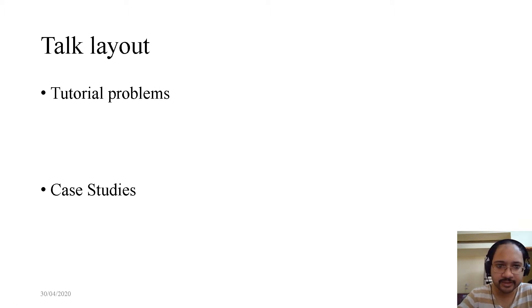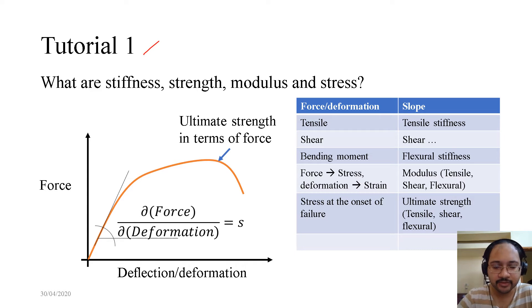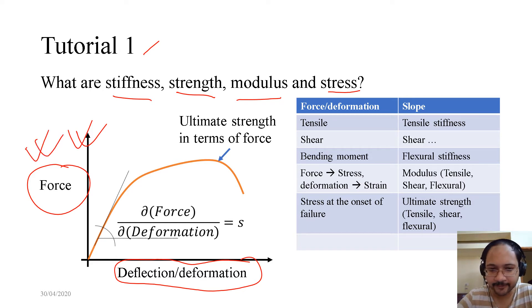Now in this talk, we will discuss two tutorial problems and two case studies. Tutorial 1: What are stiffness, strength, modulus and stress? These are some terminologies which we often confuse between their definitions. So let us look into this plot. It is a force versus deflection or deformation. That means we are applying a deformation and we are measuring the force. The reverse is also possible. Now in this case, if we try to plot force against deflection or deformation, what we get? We may get the orange line, some sort of trend where it increases, then there is a non-linearity, then gradually it fails.